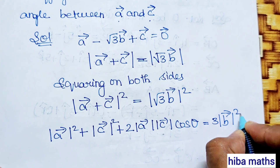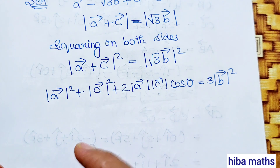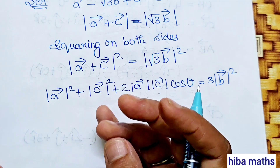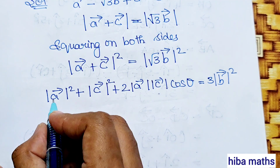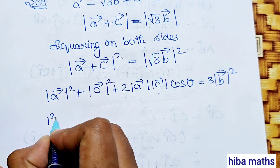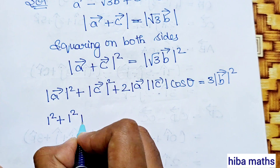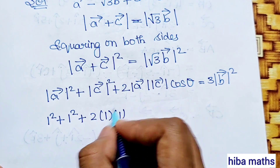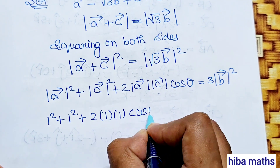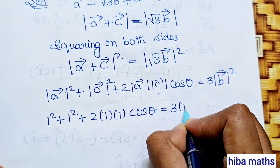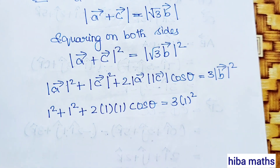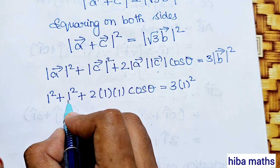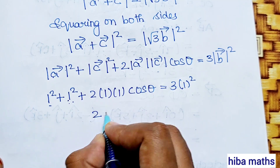Since these are unit vectors, |a| = |b| = |c| = 1. Substituting: 1² + 1² + 2·cos θ = 3·1. That gives 1 + 1 = 2, so 2 + 2·cos θ = 3.